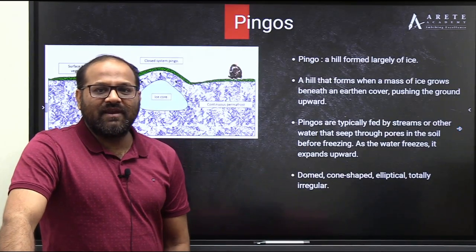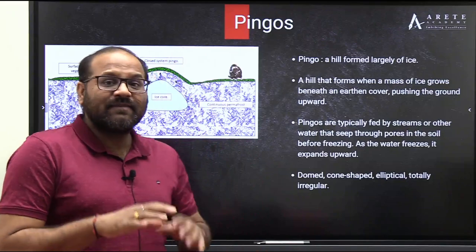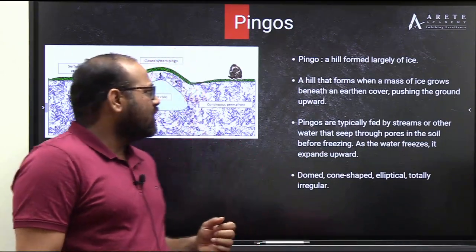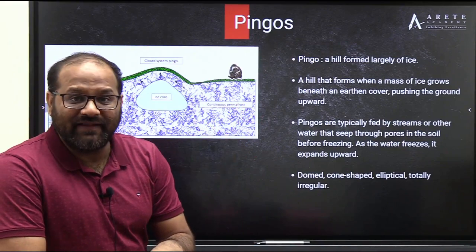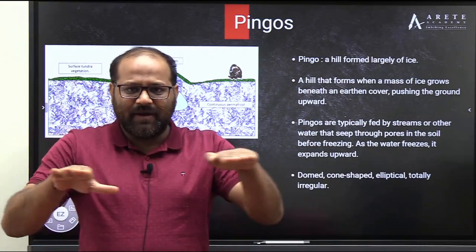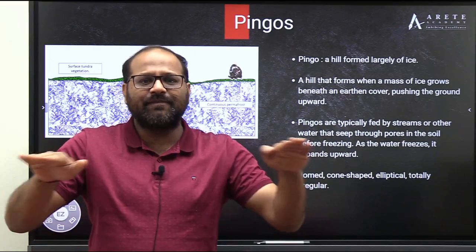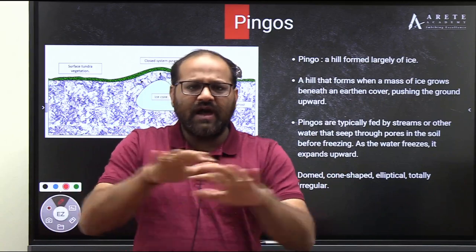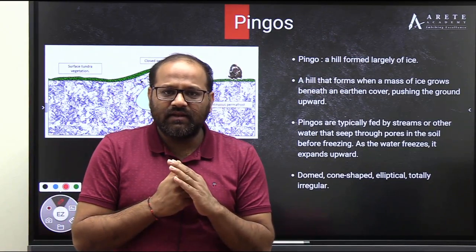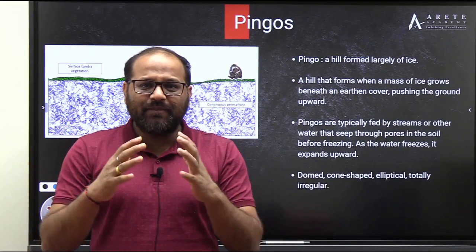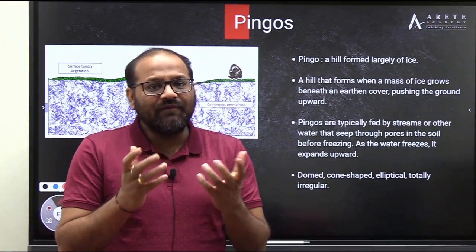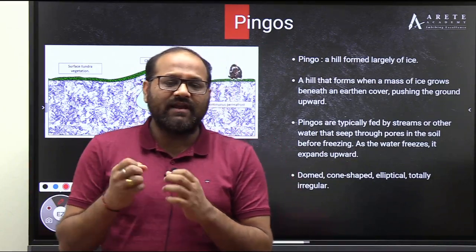A pingo is a hill formed largely of ice — a hill that forms when a mass of ice grows beneath an earthen cover. Imagine permafrost: everything is frozen. Below that ground, if water seeps through, and because of low temperatures and pressure from the permafrost above, those water particles will freeze.